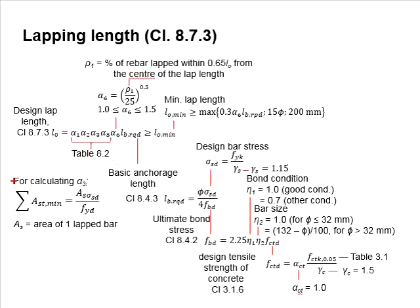It is noted that while calculating alpha 3 from table 8.2, the equations for sigma AST minimum is used here. And the AST now is referring to the area of one lap bar. This shall not be confused with the calculations for the design anchorage length.